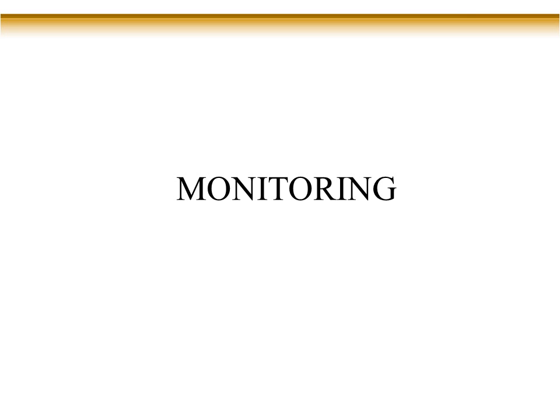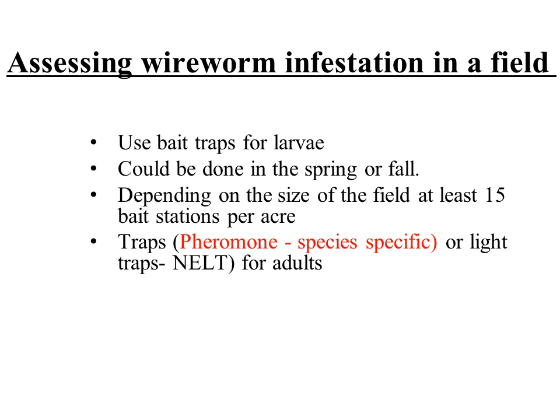For monitoring, you can use bait traps to monitor the larvae and pheromone traps or light traps to monitor the adults. You monitor in the spring and the fall for these insects, and you need at least 15 bait stations per acre because of their aggregated distribution.